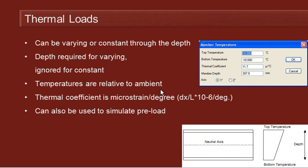The temperatures that we enter are relative to ambient temperature, so a positive temperature will result in expansion of the member and a negative temperature a contraction. And we have to enter in the thermal coefficient of the material of the member.